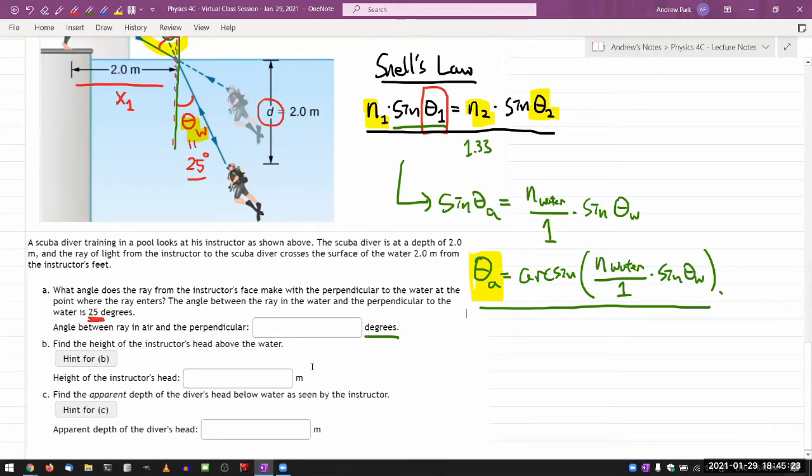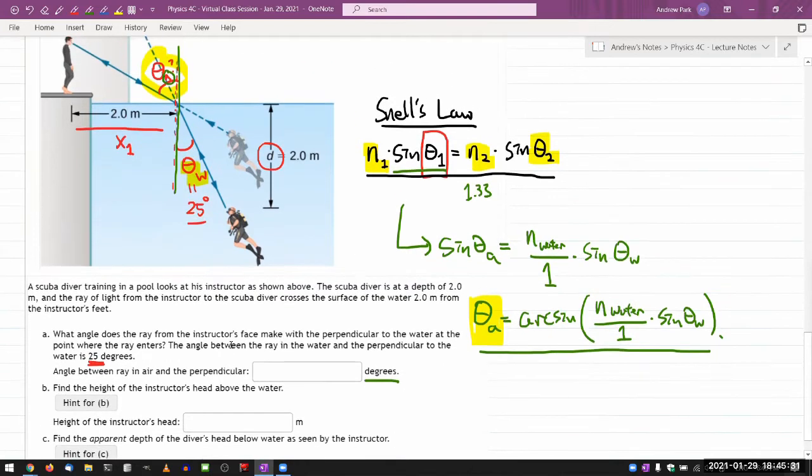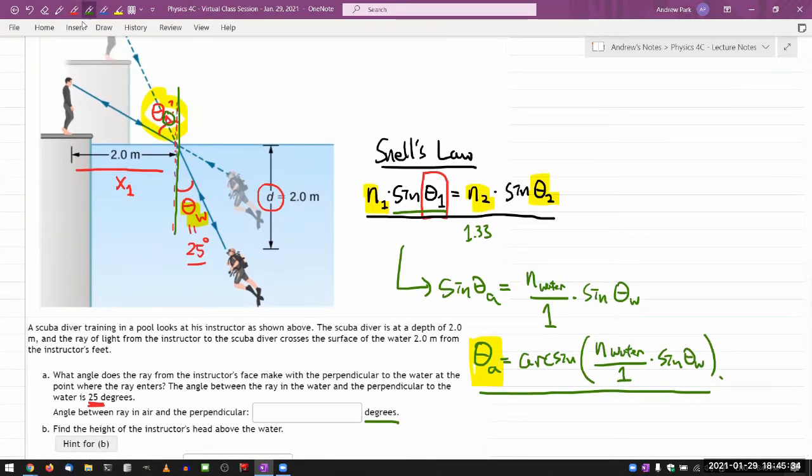So it says b, find the height of the instructor's head above the water. So I think it's asking for us this here. So, this height from his feet to here. Or actually, it said above the water. So okay, I think that actually makes the geometry easier, because I don't have to worry about what is this little thing. The way the question is worded, I don't even have to worry about it. So let me label that h. I guess I have all the triangles. So this is a right triangle.